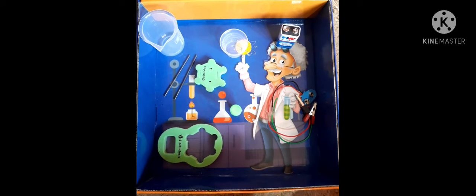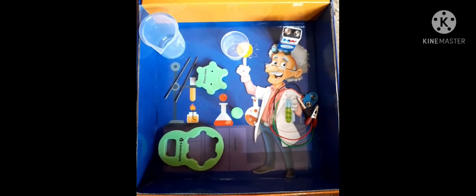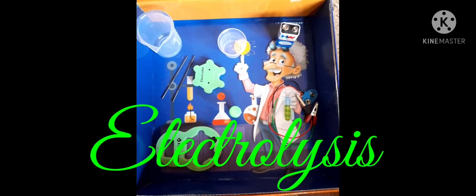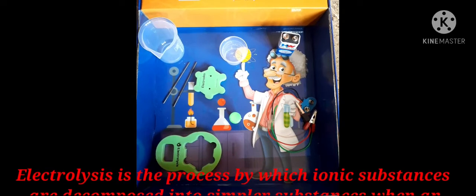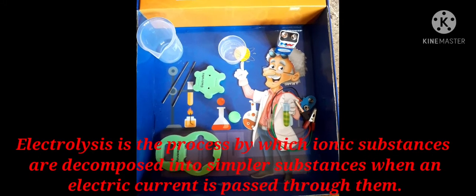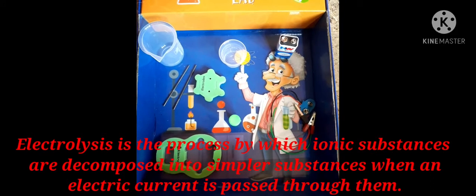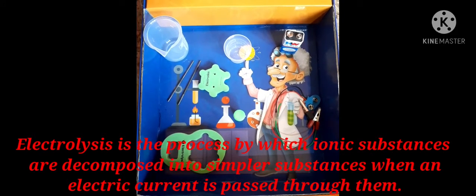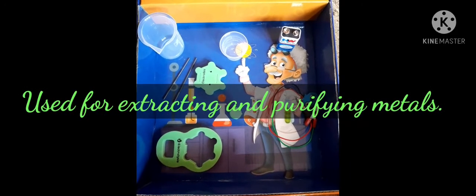Hello everyone, welcome to my channel. Today we are going to perform an experiment called electrolysis. So what is electrolysis? Electrolysis is a process by which ionic substances are decomposed or broken down into simpler substances when an electric current is passed through them. It is used to extract and purify metals.